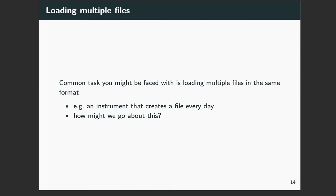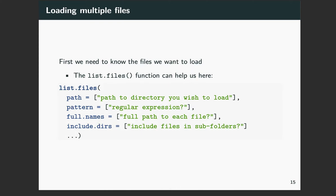So, loading multiple files. This is a common task if you have lots of files in the same format that you want to load all at once — this might be an instrument that creates a new file every day. The question is how do we go about this without having to write one line of code to load in every single file. First we need to know what files we want to load. The list.files function can really help us with this. It has lots of different options for selecting exactly what you want.